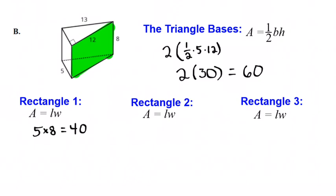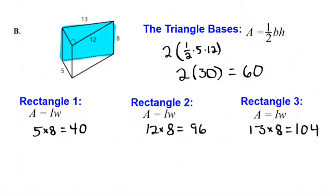Then we got this one right up here in front in green. That's a 12 by 8. That's a 96 square unit rectangle. And then we got the one in the back over there. That is a 13 by 8 rectangle, which is 104.